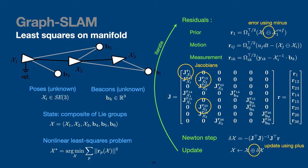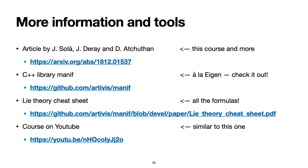That's it for this crash course — a lot of material covered very quickly. For more information, we've written a paper covering in detail everything I explained here. We've also built a C++ library called manif — check it out. With manif we have a cheat sheet with many formulas involving Lie groups and Lie theory. There is also a YouTube course very similar to this one, slightly over one hour long. Thank you very much — I now give the floor to the next speaker, Tayun Lee.